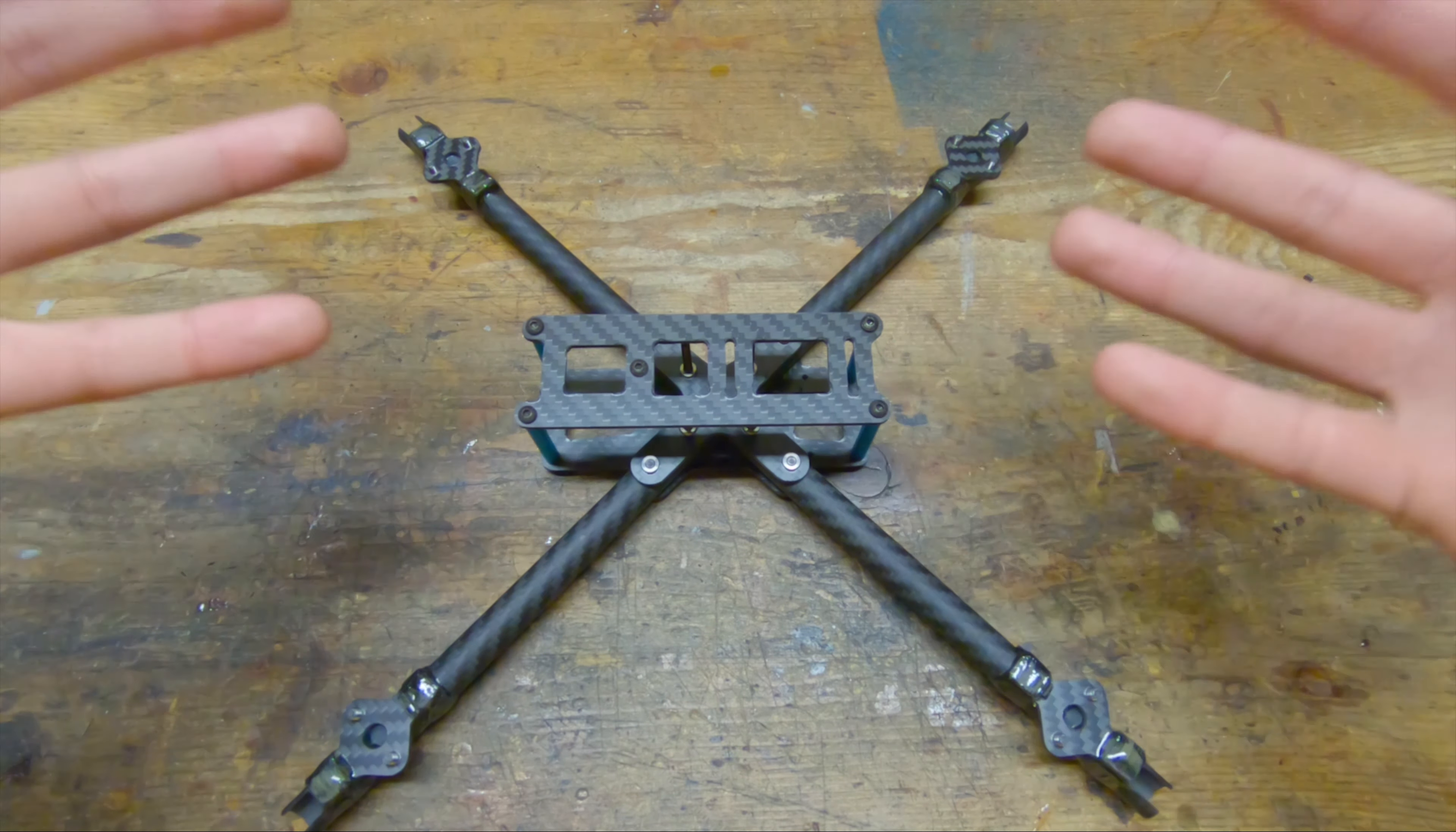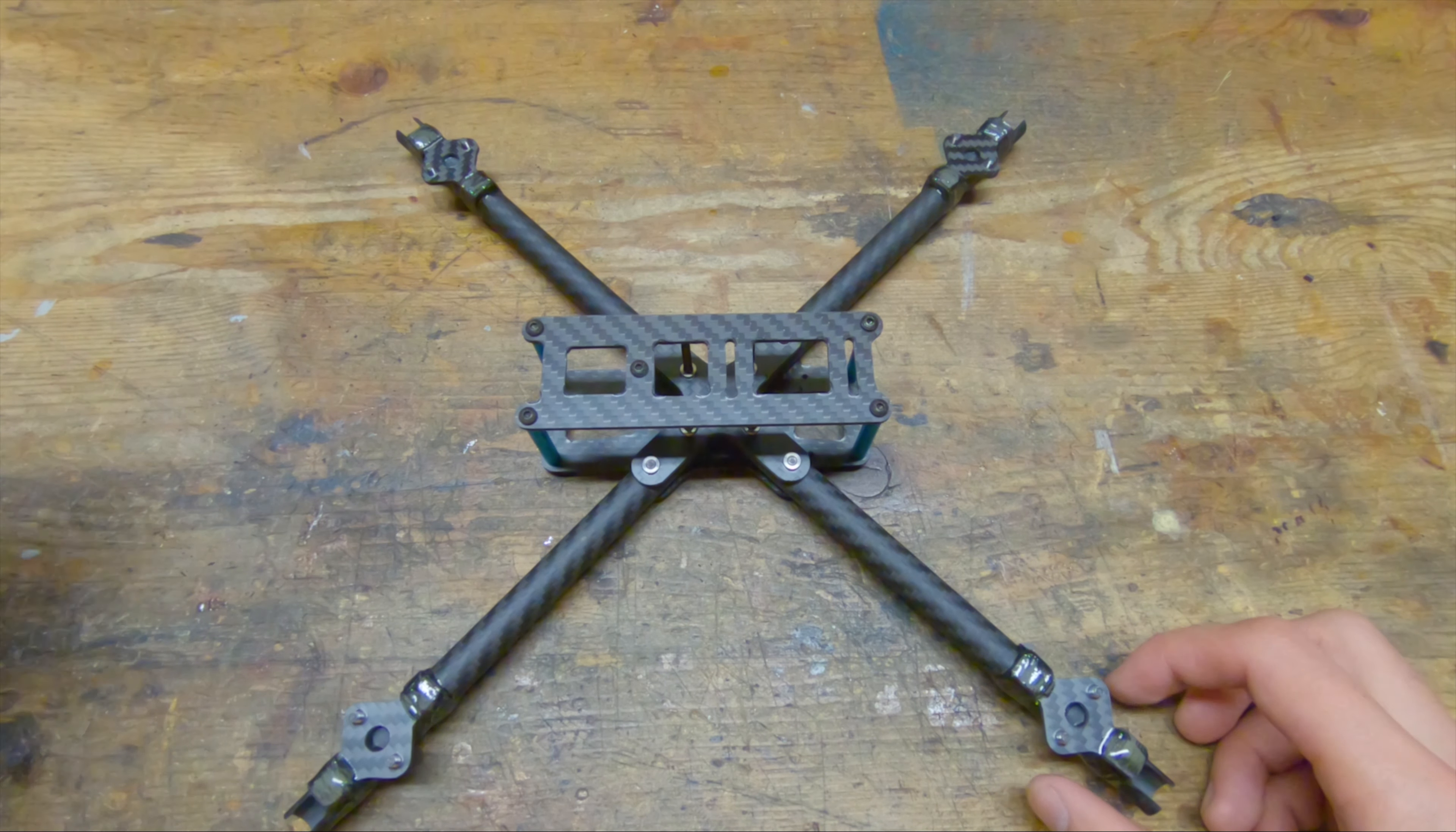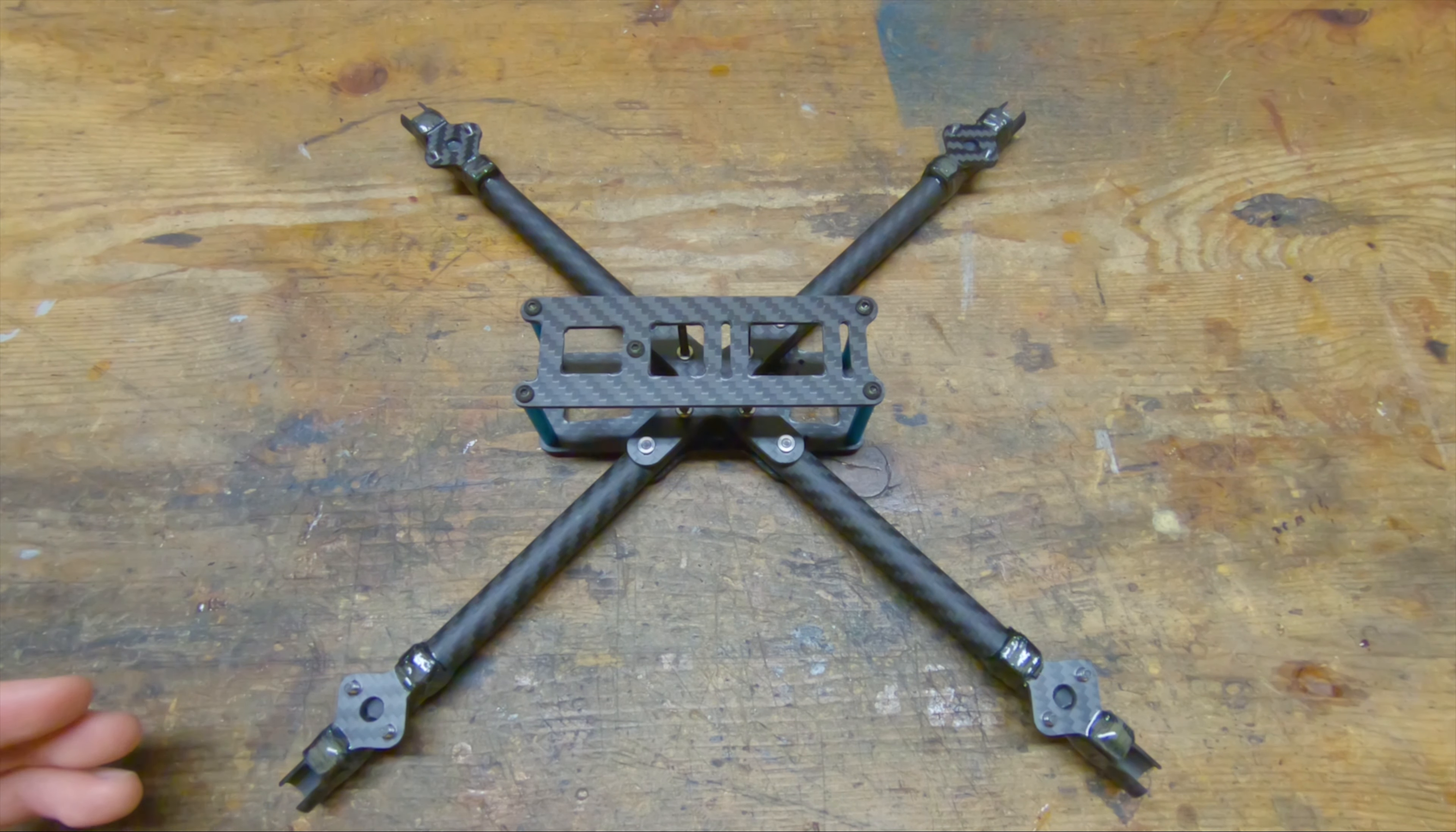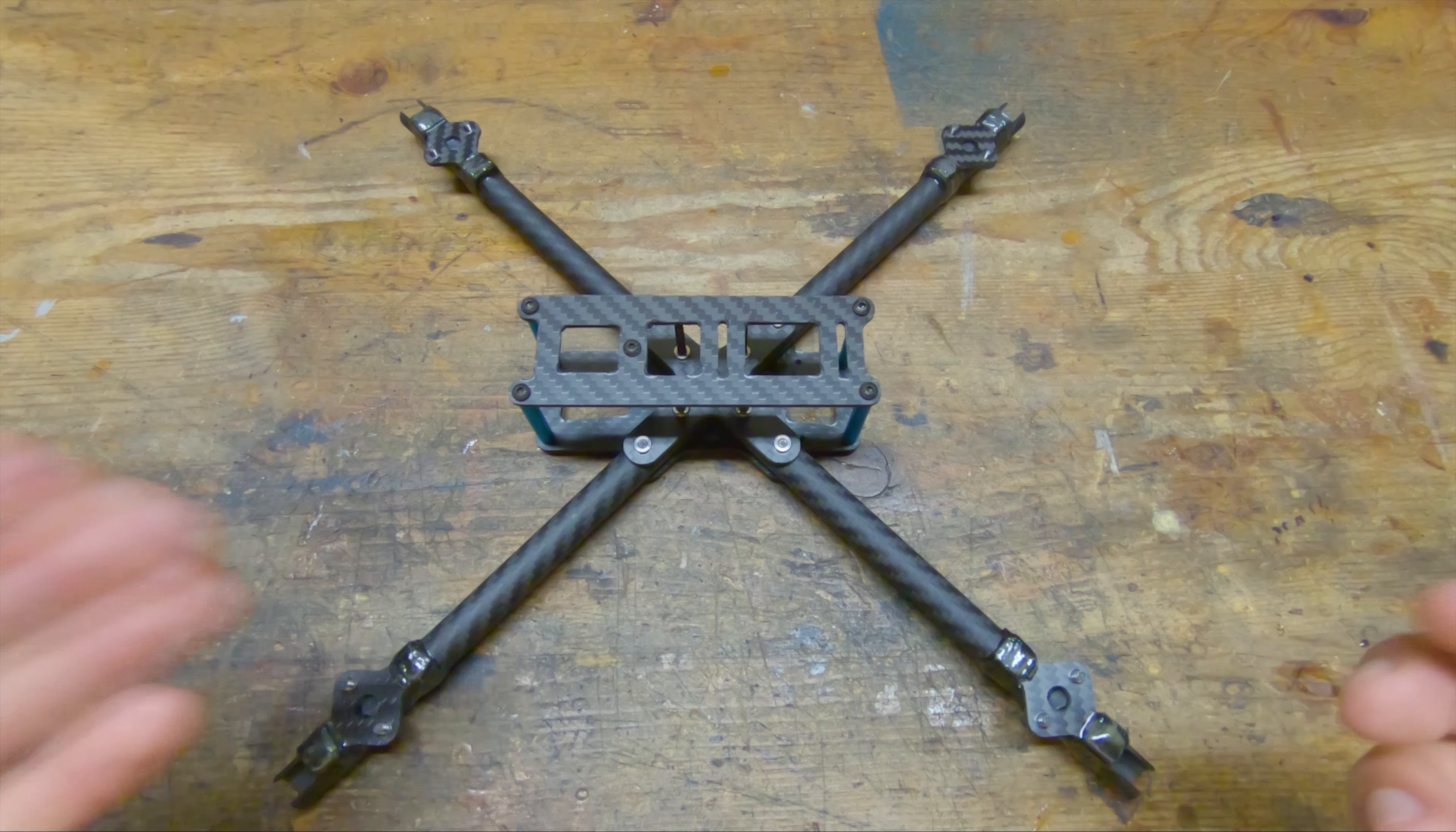The battery actually goes on sideways toilet tank style, which allows for a very short fuselage which gets all of the mass very close to the middle of the quad. This gives the quad a very low moment of inertia which improves the response and snappiness of the frame.